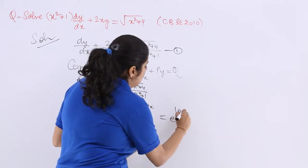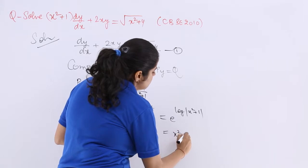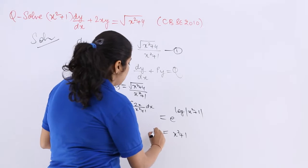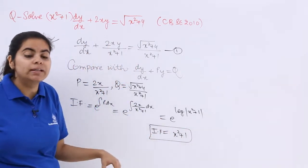So it is e^(log(x²+1)) which is nothing but x²+1 because these both nullify each other. Now this is your integrating factor and your integrating factor is very important in deciding the next step of the equation.